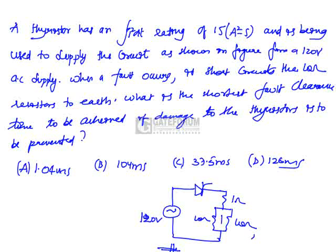So, I can represent it like this. Okay, these two are short-circuited. So, what is this equal to 0? Now, what is the shortest fault clearance time to be achieved if damage to the thyristor is to be prevented?